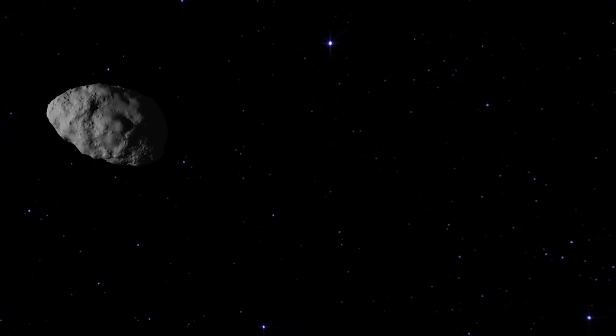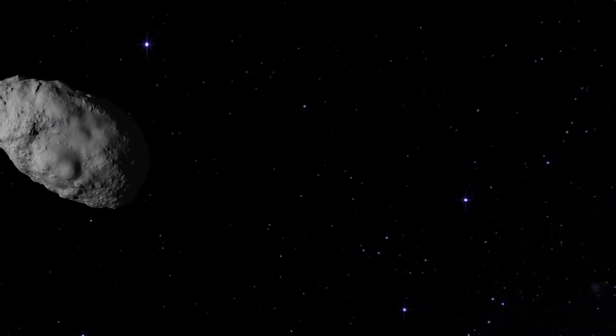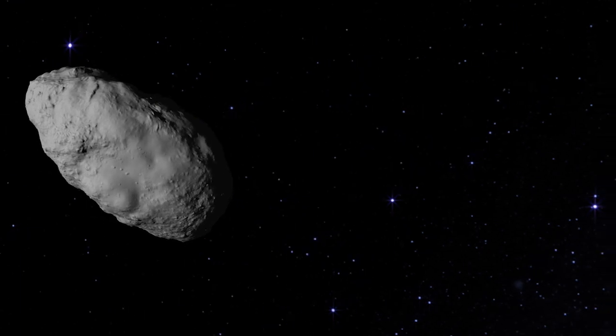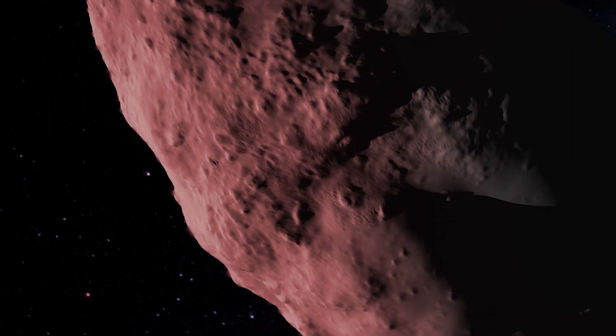But Bennu will not stay in place. Dull, non-reflective, it slowly migrates toward the sun. Solar heating turns its warm side into a low-intensity thruster.